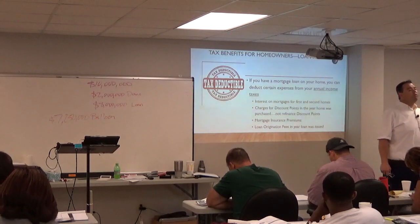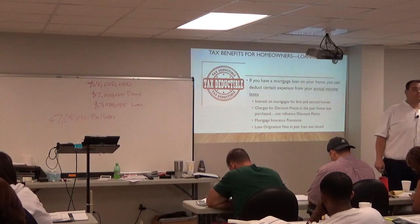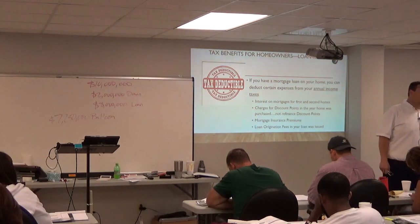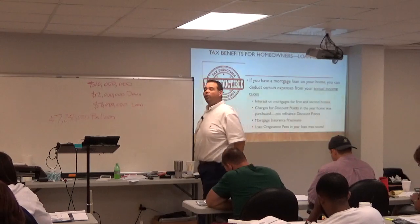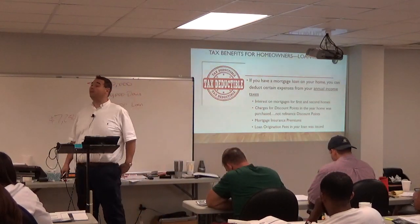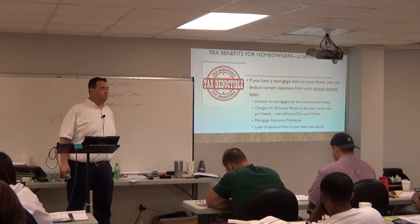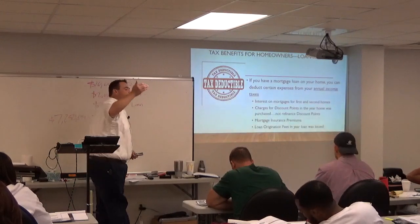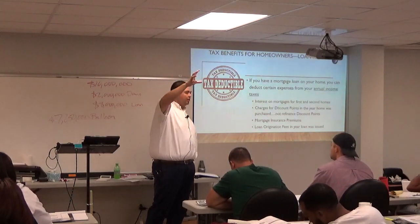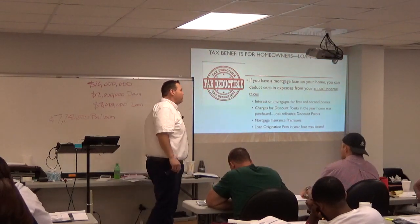These are going to be what we call tax deductions. A tax deduction does not dollar-for-dollar reduce the tax you owe — it reduces your income, which is what your taxes are based on. So if you make $50,000 but you have $10,000 in tax deductions, how much are you going to pay taxes on? $40,000. It's a dollar-for-dollar reduction in the income that your tax is based on.